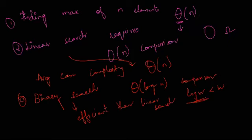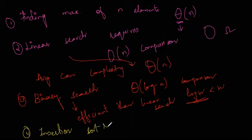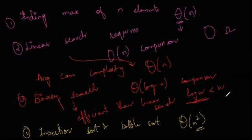For insertion sort and bubble sort, the worst case complexity is Θ(n²). Why n²? Because if the smallest element is at the end, you have to move it from the last position to the first position, which requires a lot of comparisons. Detailed explanations will be studied later, but for now just remember these values.